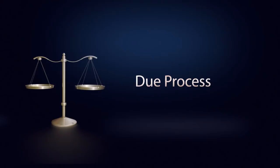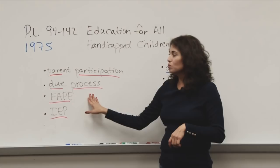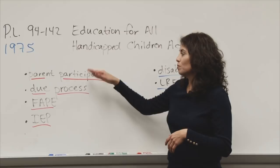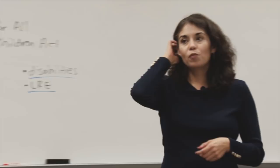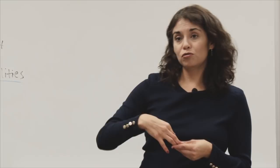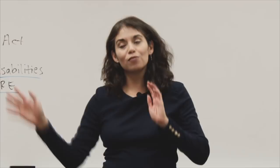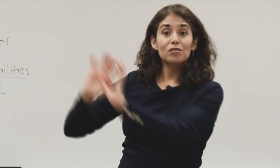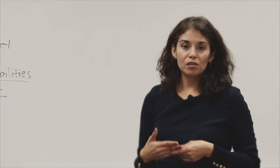The next topic is due process, also known as parents' rights. It goes along with parent participation. Due process is when parents have the right to be satisfied with their child's education — they have a right to request paperwork, to look at what and how their child is being taught. If a parent is not in agreement, they have a right to due process, even to take the school system or teacher to court, though normally it doesn't get that far. The goal is always to do mediation and lots of consultation with the parents.